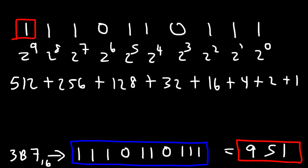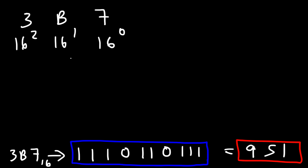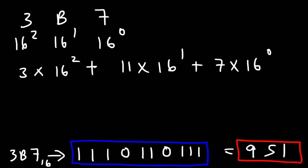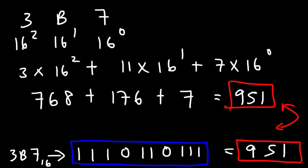Now let's convert the hexadecimal number 3B7 into a decimal number to see if we get 951. The 7 is multiplied by 16 to the 0, B (which is 11) by 16 to the 1st, and 3 by 16 squared. So it's 3 times 256 plus 11 times 16 plus 7 times 1. That's 768 plus 176 plus 7, which gives us 951. The two values match, confirming that our binary result for 3B7 is correct.